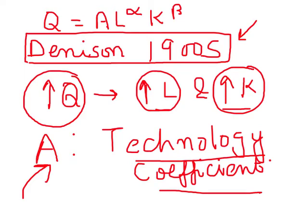This has been a general overview of the production function in the long run. In the next video, we will look at isoquants — the relationship between output, labor, and capital.